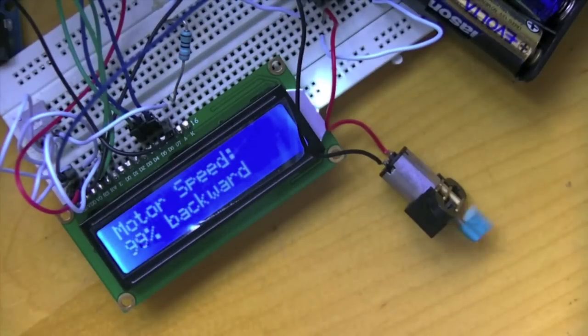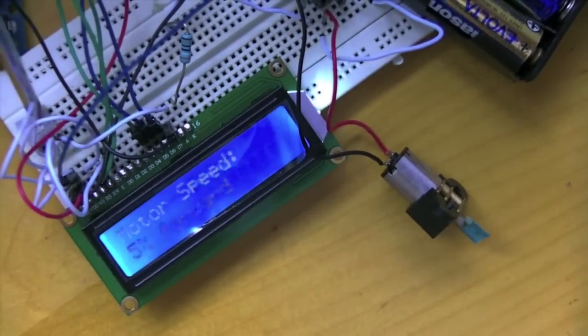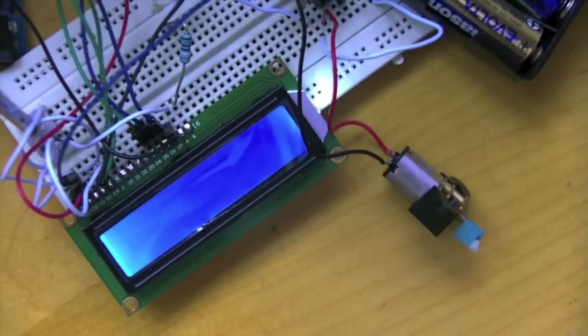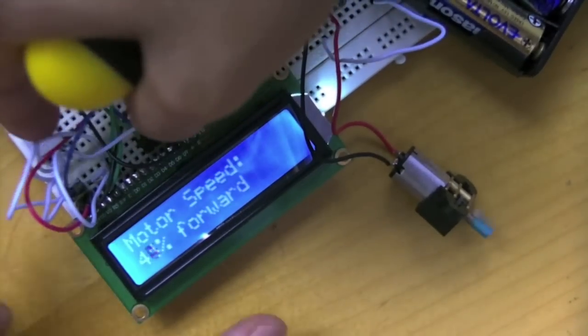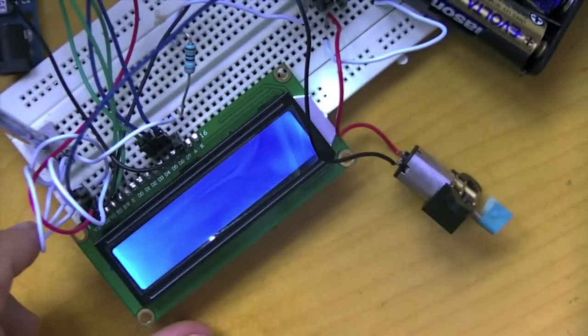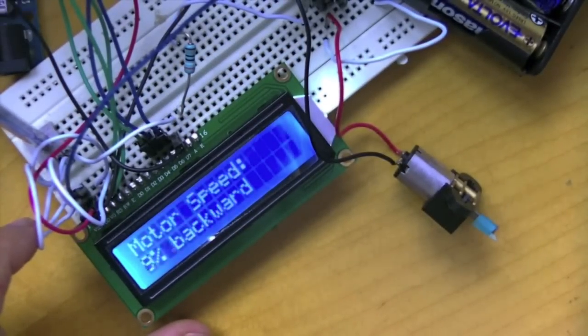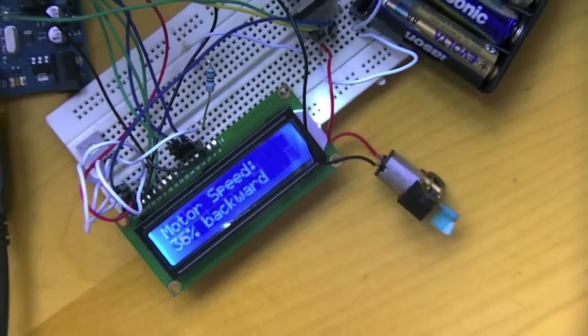One thing about the LCD, though, is that sometimes if you don't adjust the contrast, and it's set all the way to zero, it looks like the display is actually broken. Don't go throwing it out and buy another one. Just actually move the knob to see if that works.